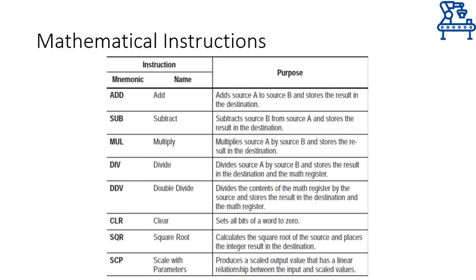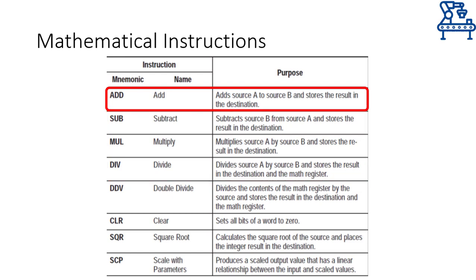The table shows several mathematical instructions that may be used as needed. The first four instructions are quite simple and perform the operation as suggested by their names. For example, the add instruction will take two inputs specified by source A and source B, add both of them, and store the result in the destination. Note that all instructions requiring two source operands may have both operands as addresses, or one of them as a program constant. Both operands cannot be constants.